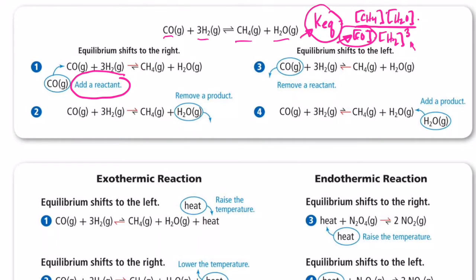If we just look at it practically, adding something on the reactant side is a stress on the system and we need to get rid of it. The best way to get rid of it is to make product out of it. We would call that a shift to the right.